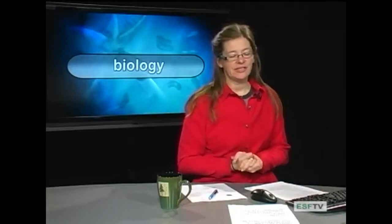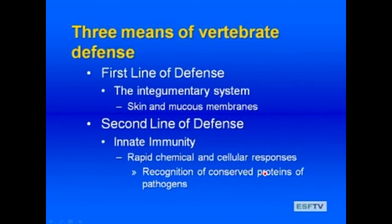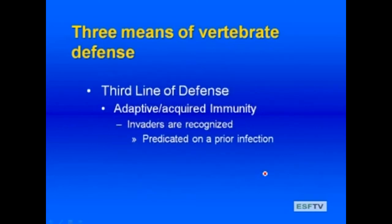An animal's first line of defense is going to be the integumentary system, which includes barriers such as our skin and our mucous membranes. Our second line of defense is our innate immune system — that rapid chemical and cellular response where our immune system recognizes particular invaders based on conserved proteins of the pathogens. The third line of defense is the adaptive or acquired immunity, where invaders are recognized based on prior infection.